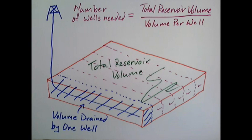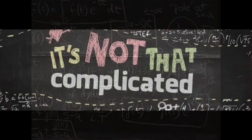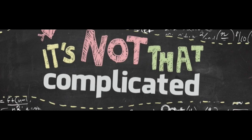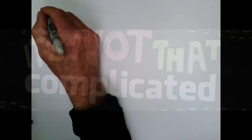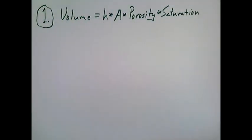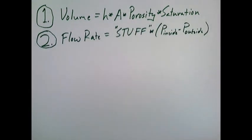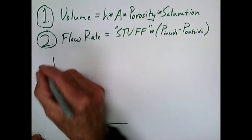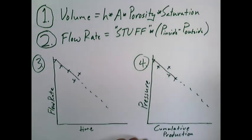There you have it. All the differential equations I learned in college aside, I really just used four simple common sense tools to understand and predict the future performance of a reservoir. Tool one, the volumetric equation, calculates the total volume of oil or gas in a reservoir. Tool two, the flow equation, predicts how fast the fluid will come out. Tool three, the flow rate versus time plot, and tool four, the reservoir pressure versus cumulative production plot, help us determine the drainage volume of a given well.